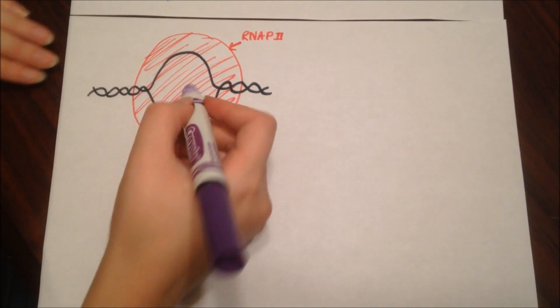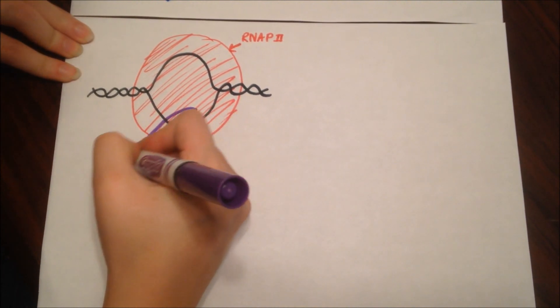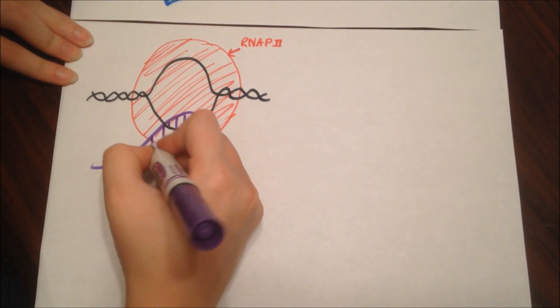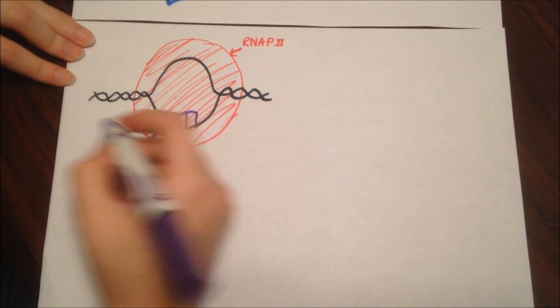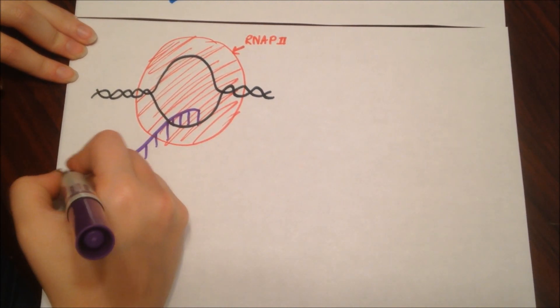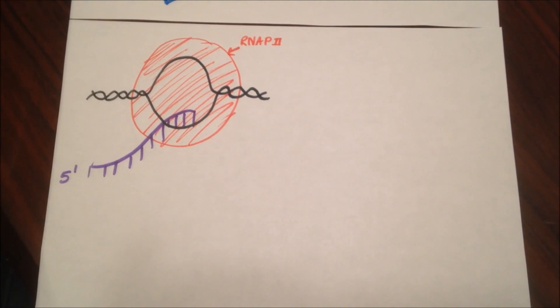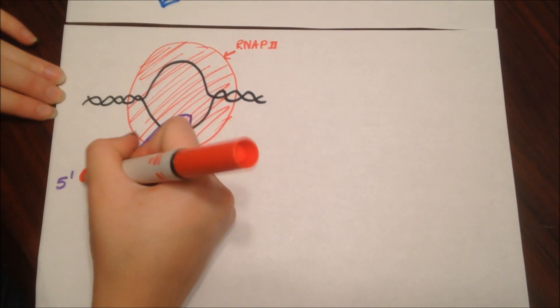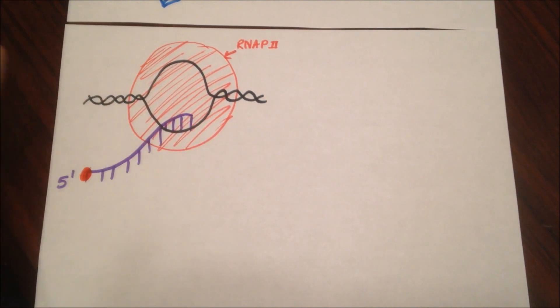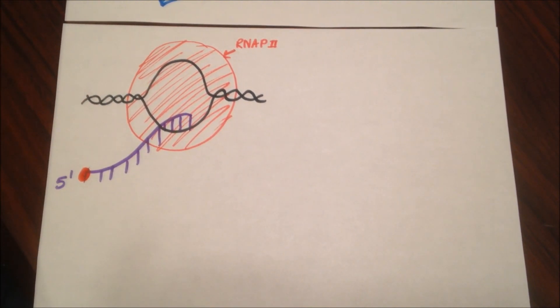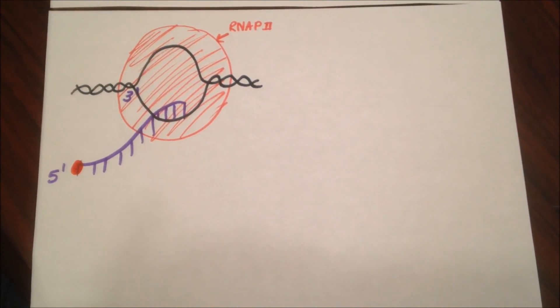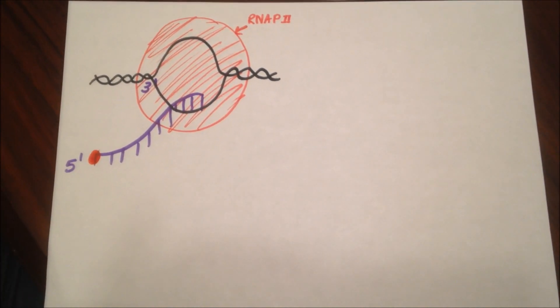Then, the RNAP2 moves down the helix as ribonucleotide triphosphates are added in the 5 to 3' direction. These include the bases cytosine, guanine, adenine, and uracil. During this time, the mRNA synthesized from RNAP2 goes through 5' capping when the 5' gets capped with a 7-methylguanine, protecting it from a nuclease attack once the mRNA enters the cytoplasm.